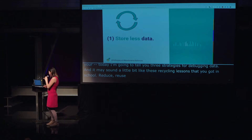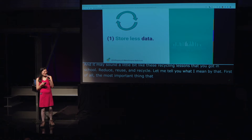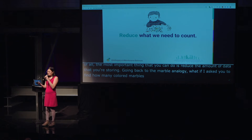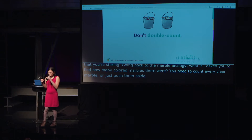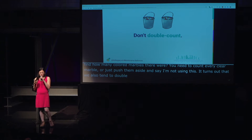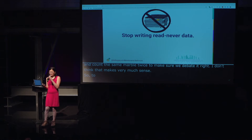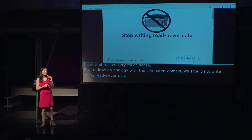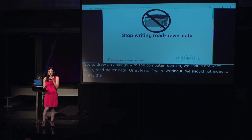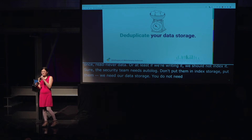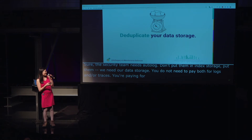The most important thing you can do is reduce the amount of data you're storing. Going back to the marble analogy, if I asked you to find how many colored marbles there were, do you really need to count every single clear marble as well? We also tend to double-count our data. In the computer domain, we should not write write-once, read-never data. Or at least if we're writing it, we should not index it. Your security team needs audit logs — don't store them in indexed storage; put them in S3 or Glacier. It's cheap. We also need to think about deduplicating our data storage: you do not need to pay both for logs and for traces.